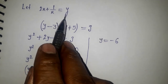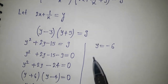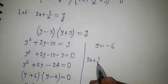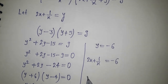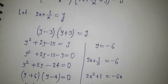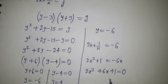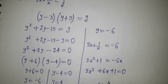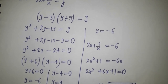For y = -6: since y = 2x + 1/x, we write 2x + 1/x = -6, which gives 2x + 1 = -6x, so 2x + 6x + 1 = 0, i.e., 8x + 1 = 0. Now it becomes a quadratic equation. Applying the quadratic formula: x = (-b ± √(b² - 4ac)) / 2a, with b = 8, a = 2, c = 1, giving x = (-6 ± √(36 - 8)) / 4.